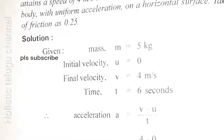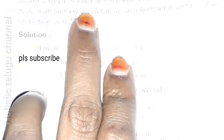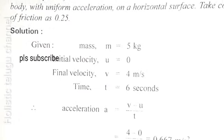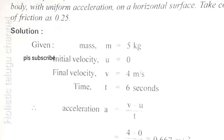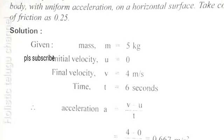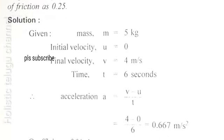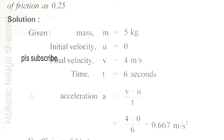Problem: a body having a mass of 5 kg starts from rest and attains a speed of 4 m/s in 6 seconds. Find the force required to move the body with uniform acceleration on a horizontal surface. Take coefficient of friction as 0.25. Given: mass 5 kg, initial velocity u equals 0, final velocity v equals 4 m/s, time t equals 6 seconds.